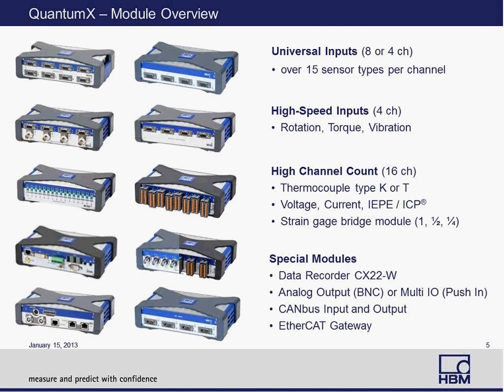The QuantumX family has many different hardware modules available, released over the years. The most common ones are the universal input modules, namely the 840A and the 440A, which are well known in the industry to accept almost any kind of sensors — about 15 different types. These are great tools for high-mix, low-volume, low-channel-count applications. There are also other modules for rotation, torque, and vibration — high bandwidth modules that acquire vibration signals up to 200 kilo-samples per second.